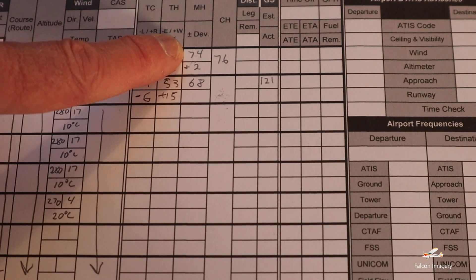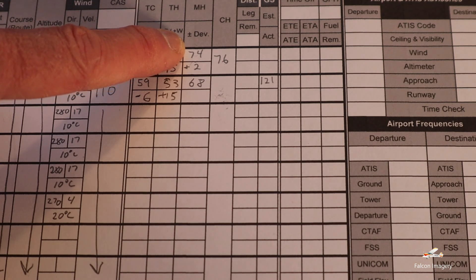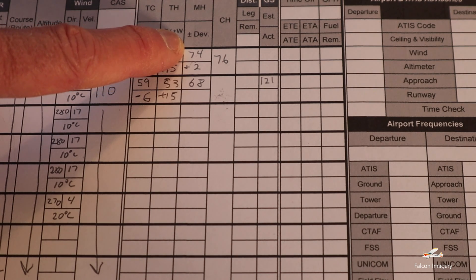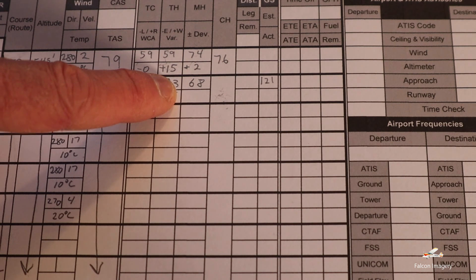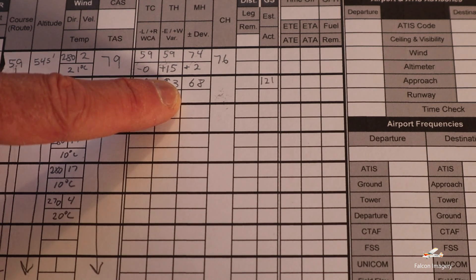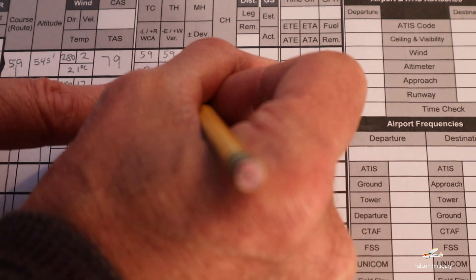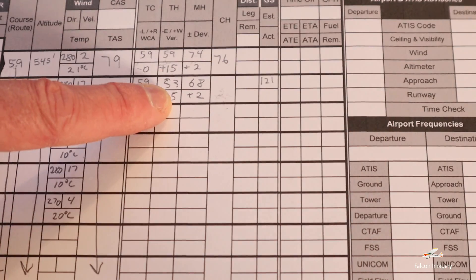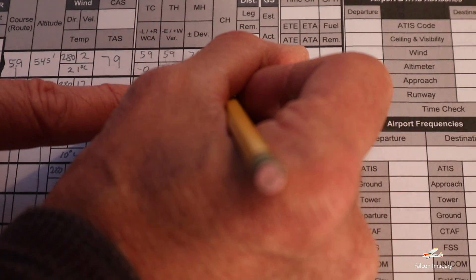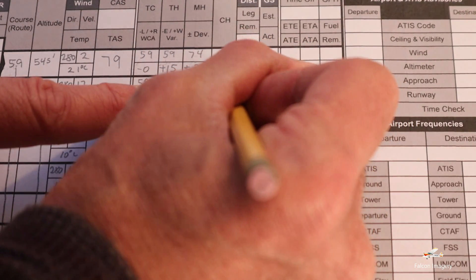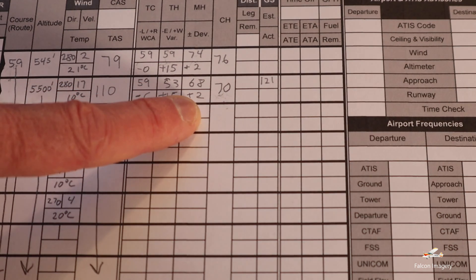Now the last thing we have to look at is what is our compass deviation. We can check out our compass deviation errors by looking at the deviation card associated with the compass. I know in the case for the compass that we're using in our aircraft, in the heading that we're roughly on, it's about 2 degrees. So we're going to put plus 2, and this means we're going to fly a heading, a course heading in the end, of 70.